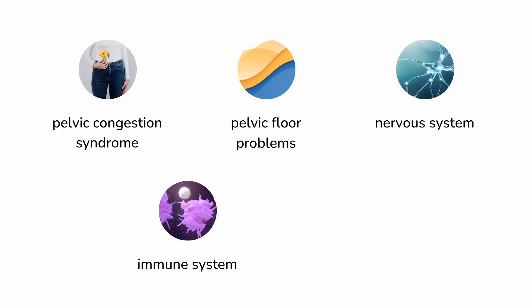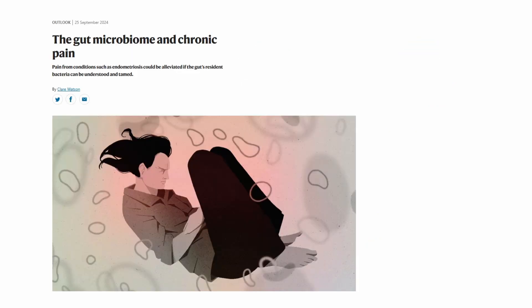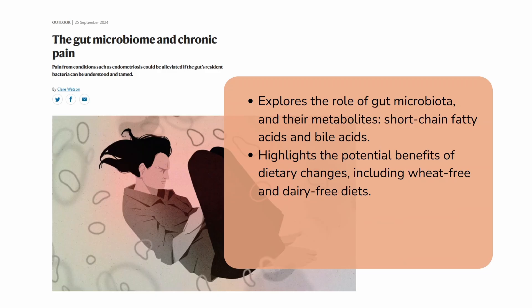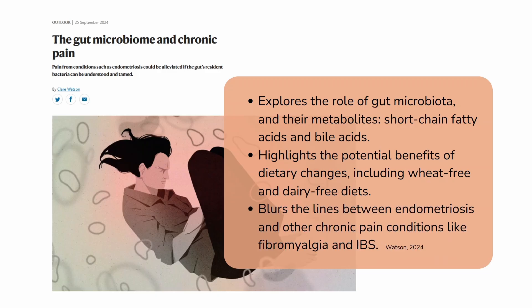So can the immune system. The gut is interesting because there's growing evidence that it can play a huge role in pelvic pain and infertility, whether that involves endometriosis lesions or not. That's explained in a 2024 Nature article called The Gut Microbiome and Chronic Pain, which explores how the gut microbiota and their associated metabolites — like short-chain fatty acids and bile salts — are altered in people who have pain syndromes like fibromyalgia and endometriosis. The article even mentions the potential value of a wheat-free, dairy-free diet.